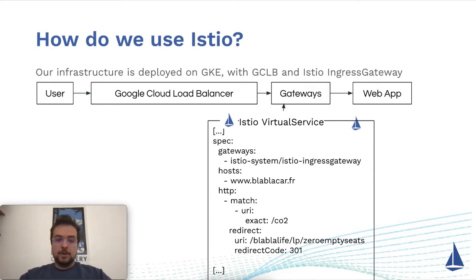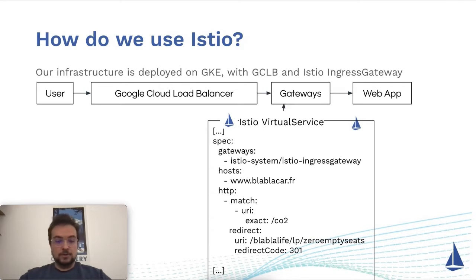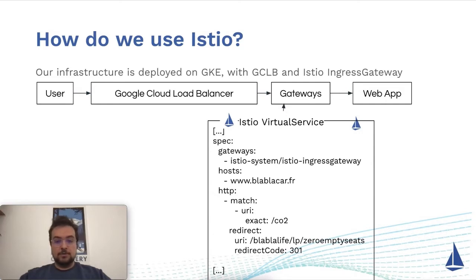And this is where the magic happens. We have deployed a custom resource named virtual service, made available through the custom resource definition of Istio, which allows you, by matching a host and the URI, to redirect the page to a new one with a given status code.